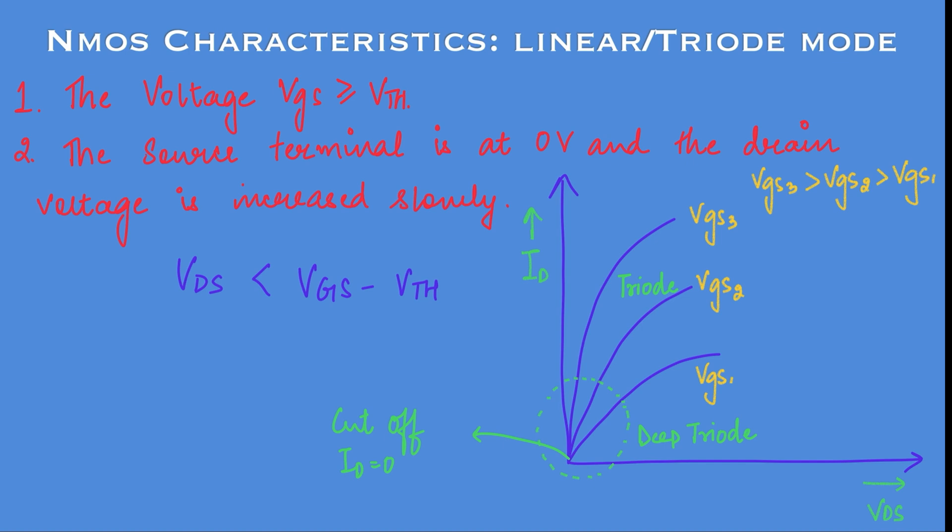If you increase the gate-to-source voltage as shown in the chart — VGS3 is greater than VGS2, which is greater than VGS1 — then obviously the drain current will also increase.